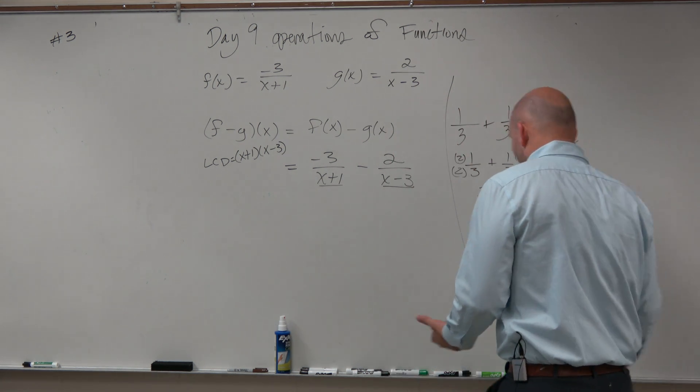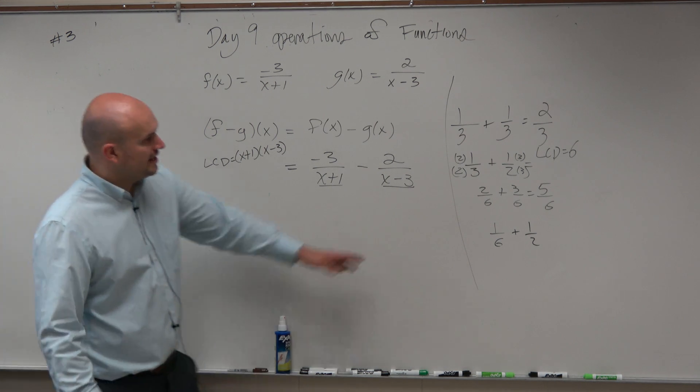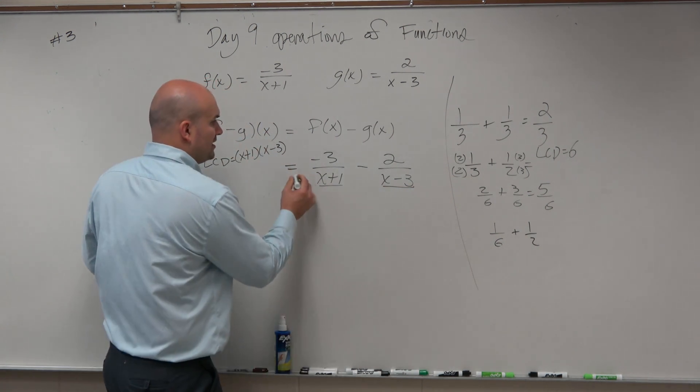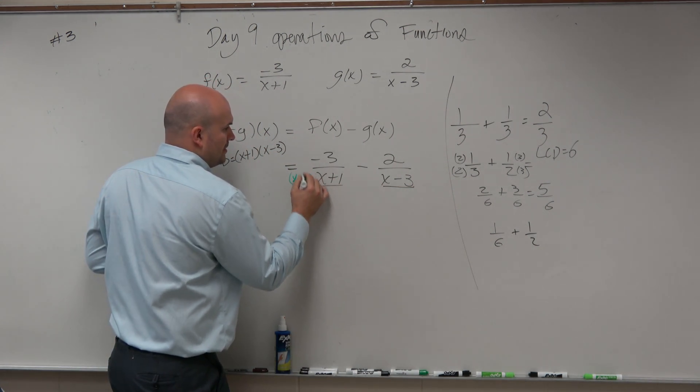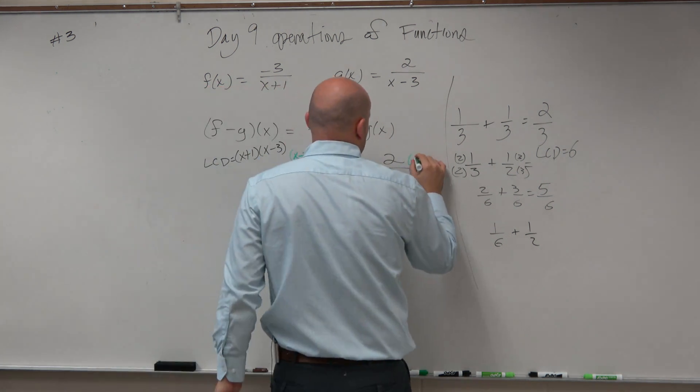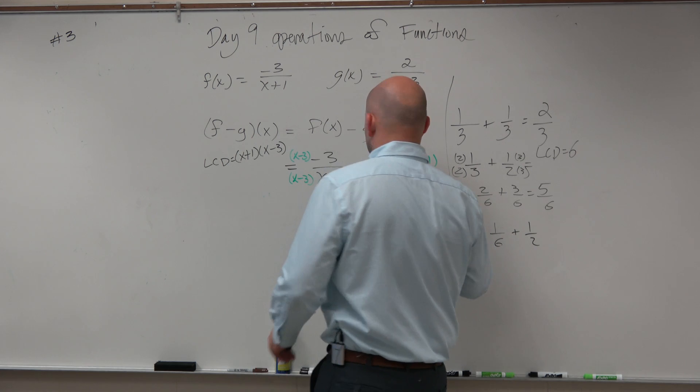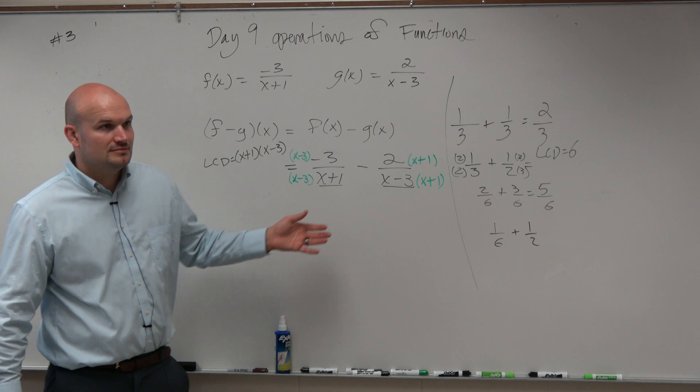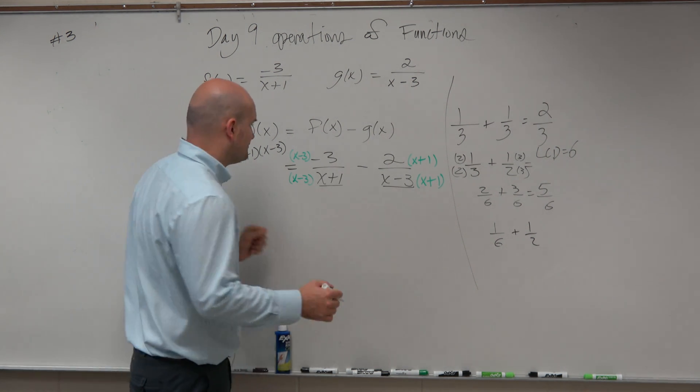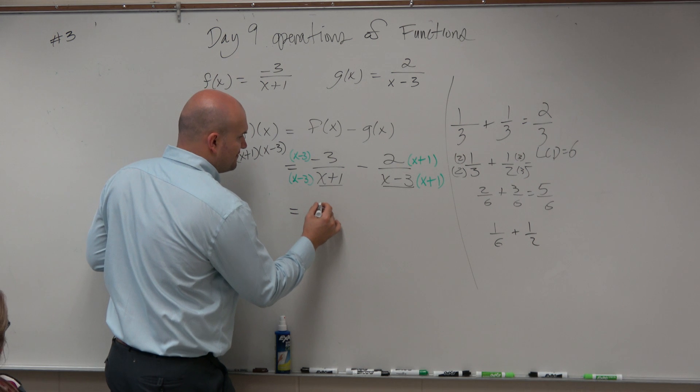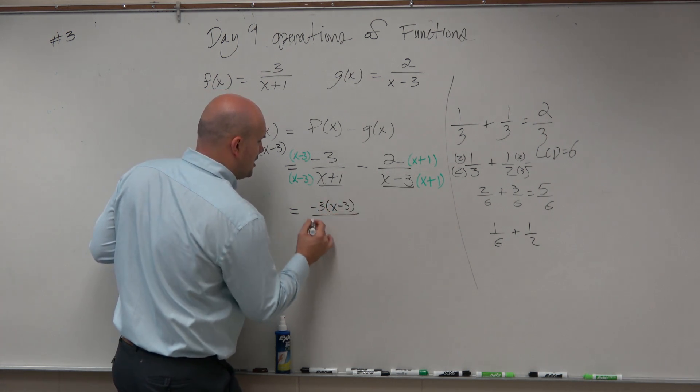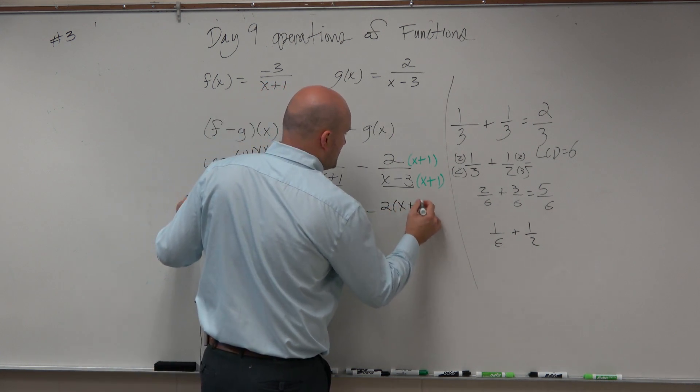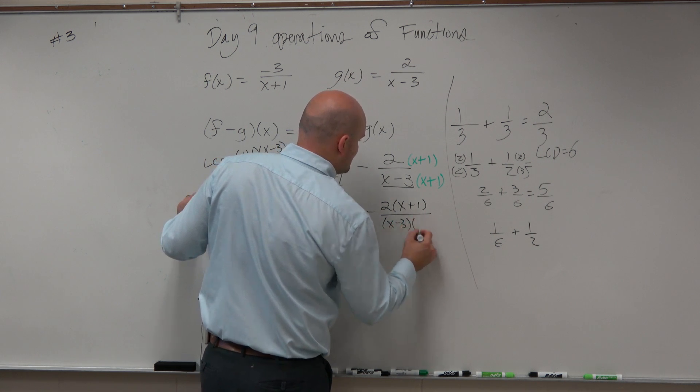So just like we did before, here, I had to multiply by the other factor to get me my least common denominator. So here, I'm going to multiply by the other factor on the top and the bottom. Now, I really have negative 3 times x minus 3, all over x minus 3 times x plus 1, minus 2 times x plus 1, all over x minus 3 times x plus 1.